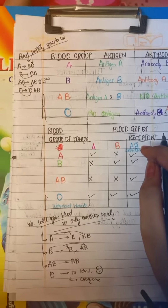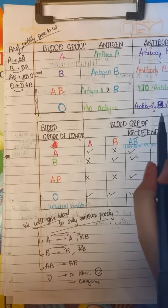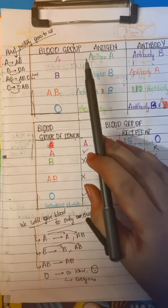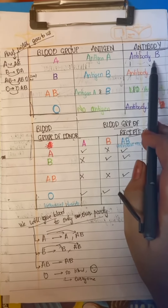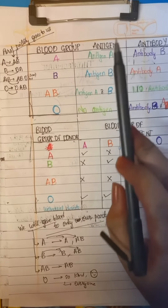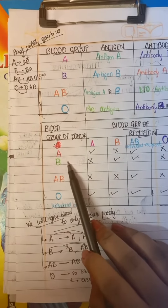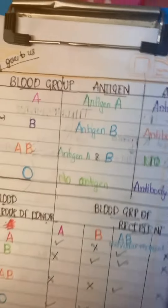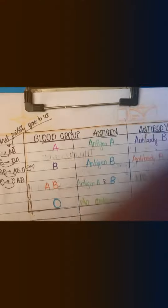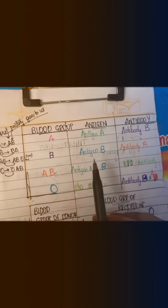Hi guys, today we will be learning how to remember which blood group has which antigen and antibody, and which blood group of donor can give to which blood groups. First, we will learn which blood group will have which antigen and which antibodies.